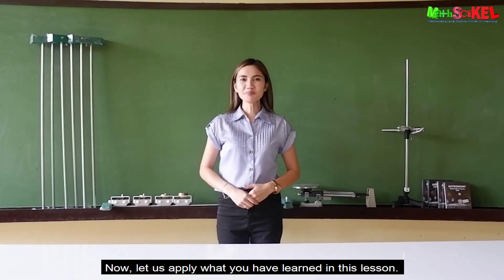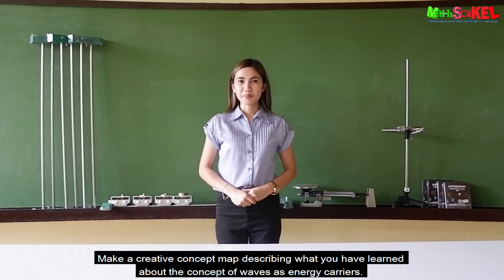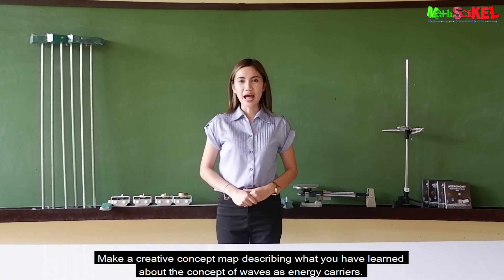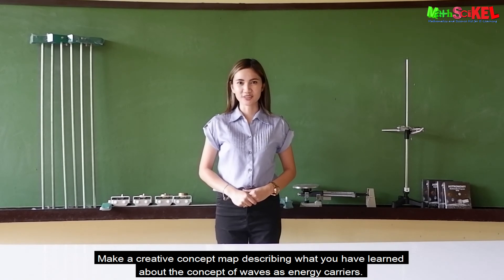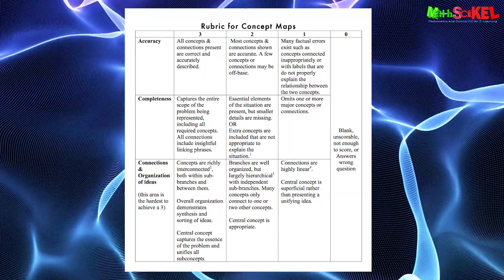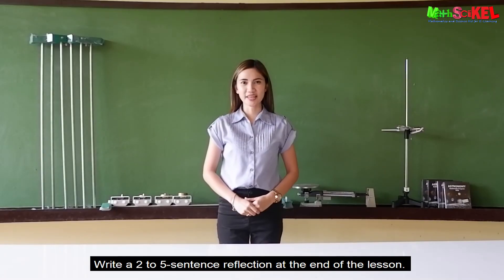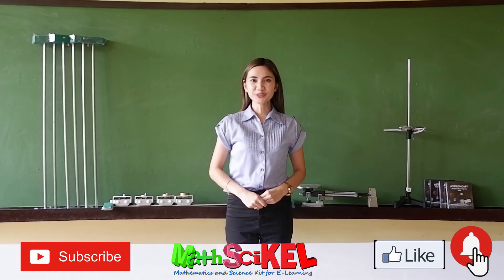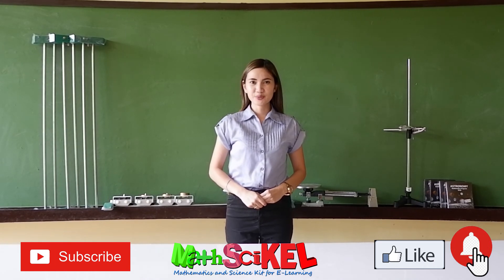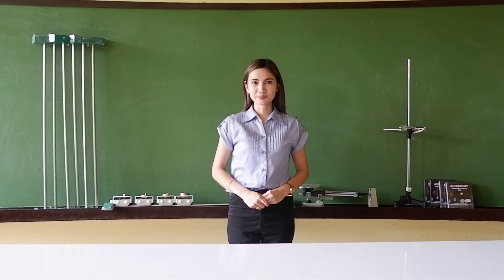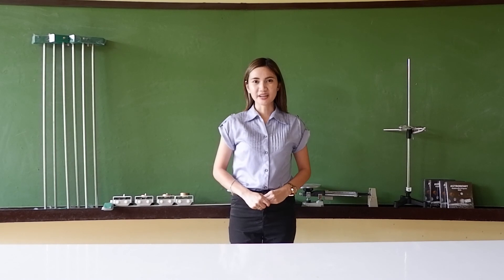Now let us apply what you have learned in this lesson. Create a concept map describing what you have learned about waves as carriers of energy. Write a 2 to 5 sentence reflection at the end of the lesson. Please subscribe to our YouTube channel, like our videos, and hit the bell button for updates. On the next episode, we will explain the color and intensity of light in terms of its wave characteristics.